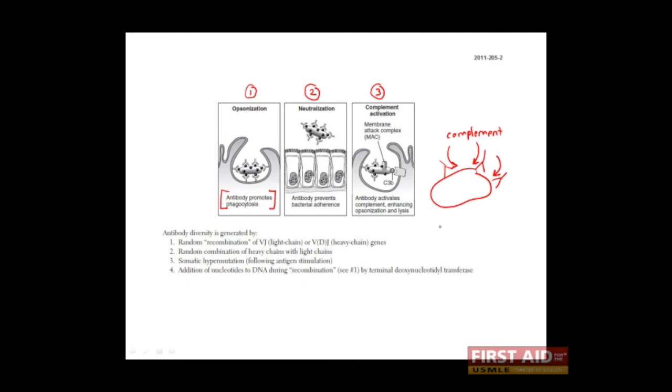There are many complement proteins, but in their final pathway, the terminal complement proteins, known as C5, C6, C7, C8, and C9, interact to form something which is called the membrane attack complex or MAC.